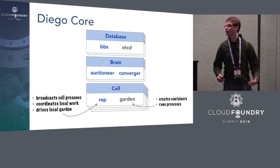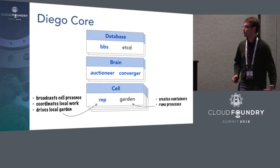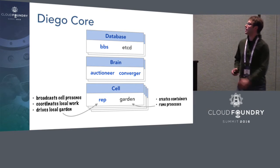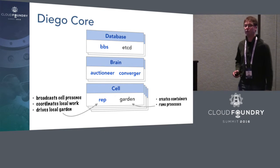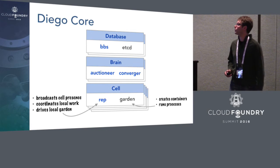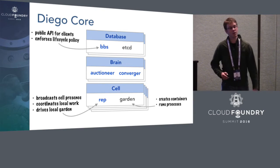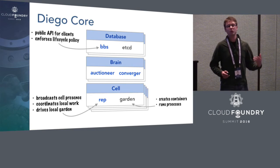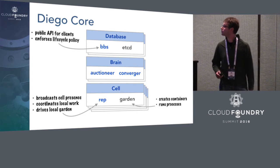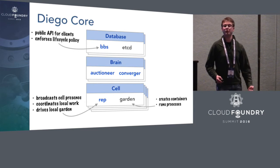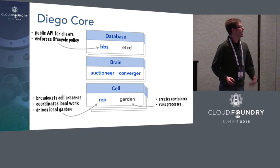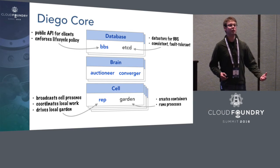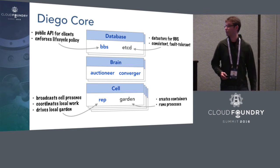Each cell is ready to receive work, but we also need to know how to specify that to the system. That's where the database VM comes in, hosting the BBS — the bulletin board store. This presents the public API for clients of the Diego core to specify the workloads they want to run in the cluster. The BBS also knows about different types of lifecycle policies for those workloads and enforces them. We've co-located the BBS on these database nodes with the etcd it uses for persistence.